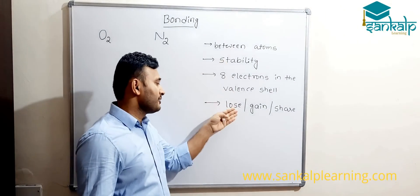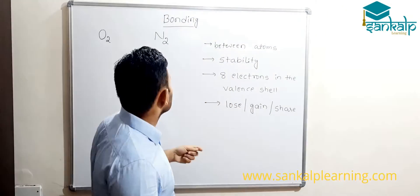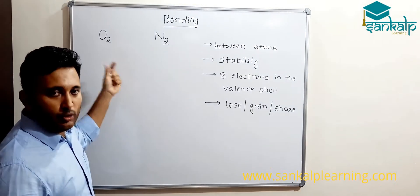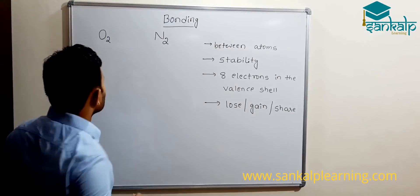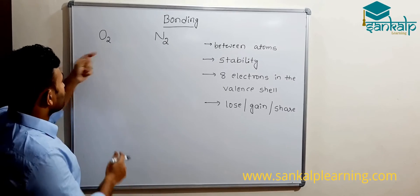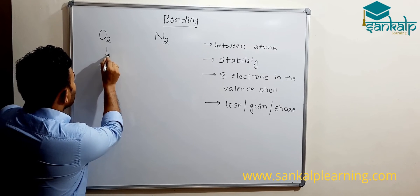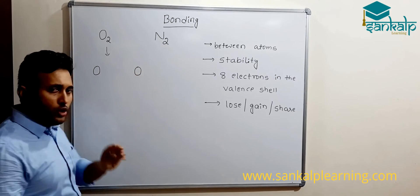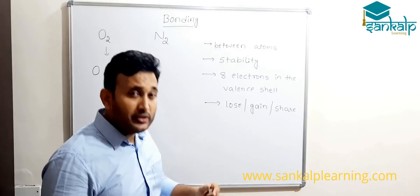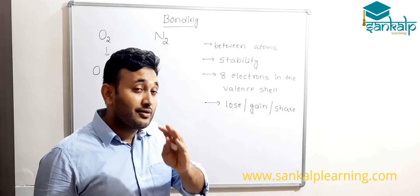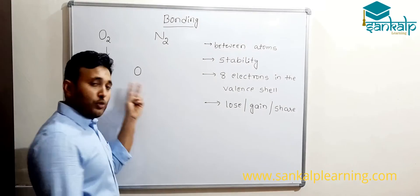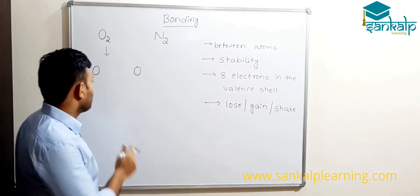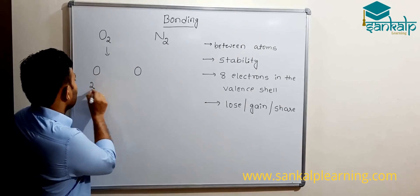These are the basic prerequisite knowledge we should have before understanding bonding in different molecules. First, we'll take the oxygen molecule. In the oxygen molecule, there are two oxygen atoms. We should know the electronic configuration of each atom. Since both atoms are oxygen, the electronic configuration is 2 and 6 for each atom.